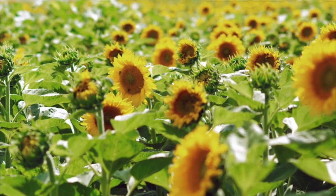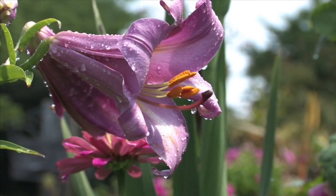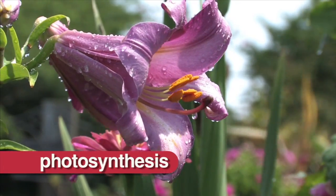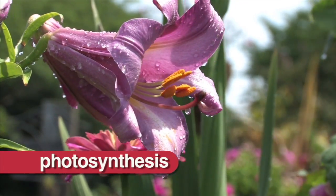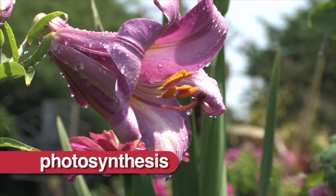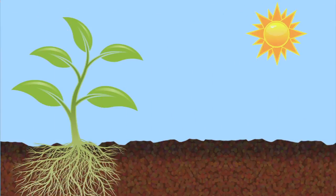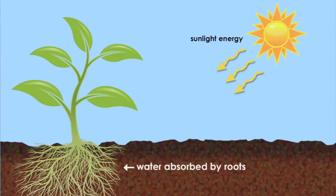Plants use a process called photosynthesis to produce glucose. In photosynthesis, the plant absorbs energy from the sunlight, water, and carbon dioxide.